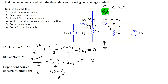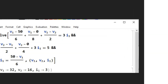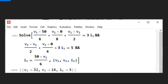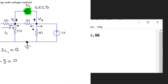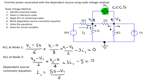Hence, we have three equations and three unknown variables V1, V2, and I1, and these equations can be solved to obtain the solution. We can use Mathematica to solve these linear equations, and using the Mathematica solve command, we can easily obtain the solution. The obtained solution is V1 equals 32 volts, V2 equals 16 volts, and I1 equals 3 amps.